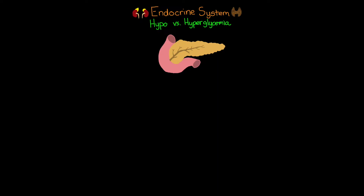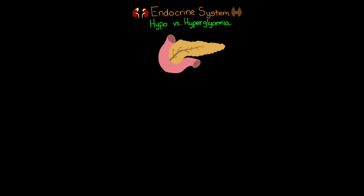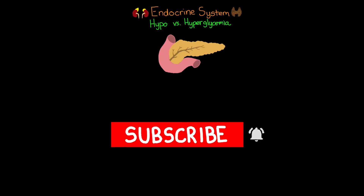Welcome back to the next lesson in our series covering the endocrine system. In this lesson, we're going to be talking about the differences between hypoglycemia and hyperglycemia. My name is Eddie Watson, and this is ICU Advantage. If this is your first time to this channel and you'd be interested in seeing more in-depth critical care educational content, please subscribe to our channel and hit the bell icon so you'll be notified as soon as new lessons become available.